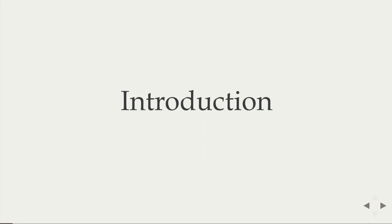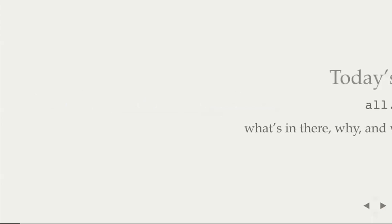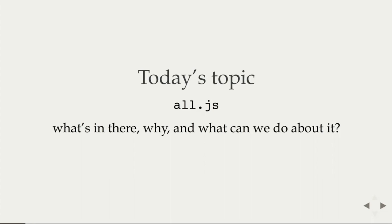Today's topic is basically all.js, which is one of the JavaScript files you get if you run the compiler on a Haskell program. I'd like to explain what's in there, why I made certain choices, and why certain suggestions I hear often don't really work.